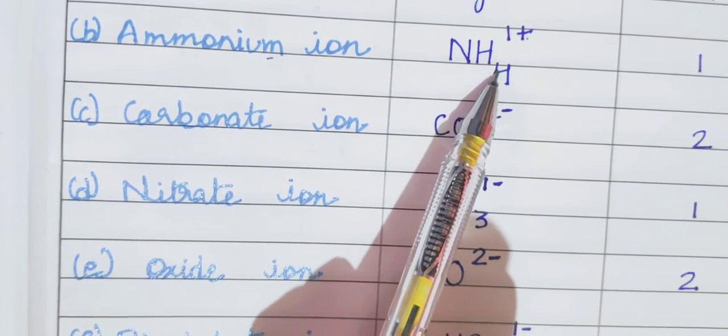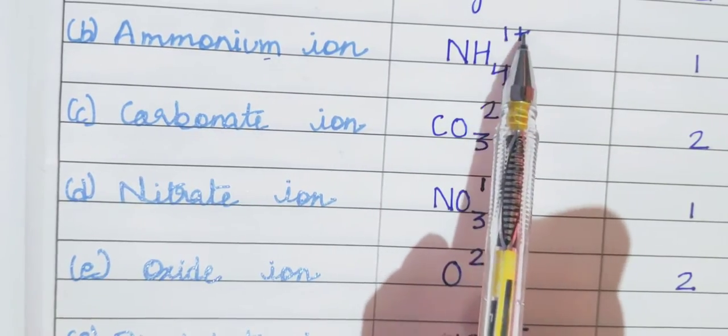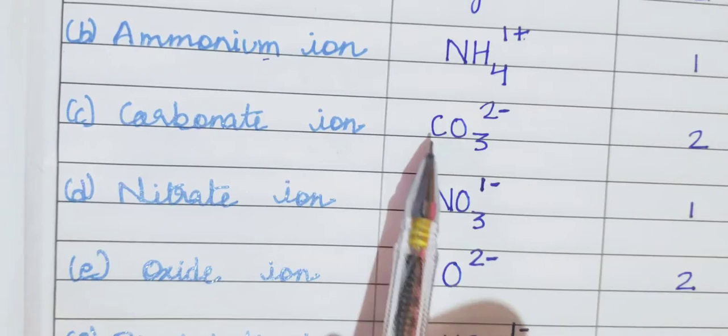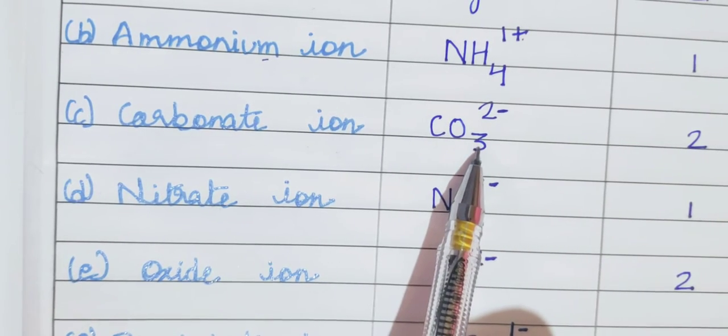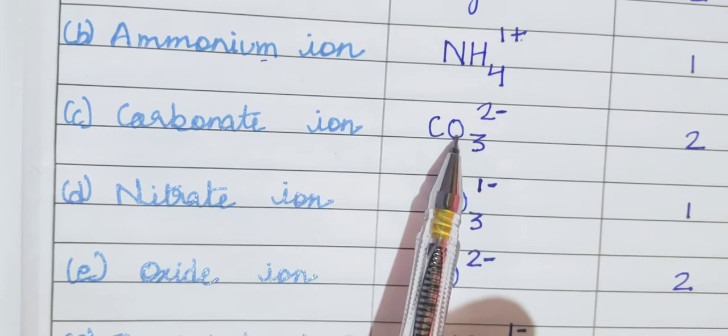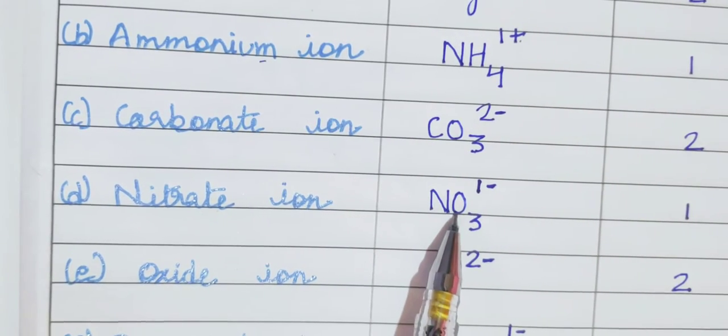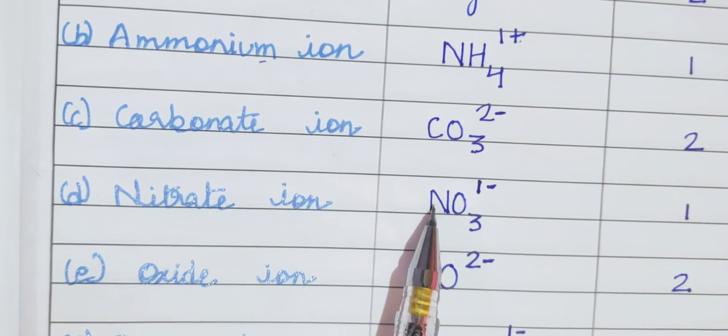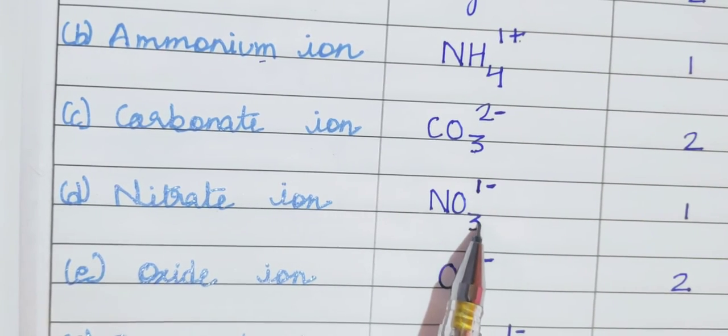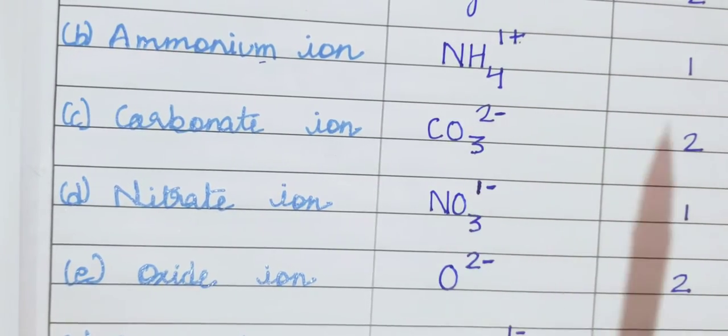Because there are 4 hydrogen atoms in ammonium ion. And 1 plus is the superscript. CO3, 3 because there are 3 oxygen atoms in nitrate ion, which is a radical and whose valency is 1, minus 1.